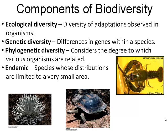Phylogenetic diversity considers the degree to which different organisms are related. The more distantly related the organisms are within a collection, the higher the phylogenetic diversity. Recall those phylogenetic trees that show how organisms are related — if the organisms in a population come from very distant branches on that tree, they are not closely related and phylogenetic diversity is very high.